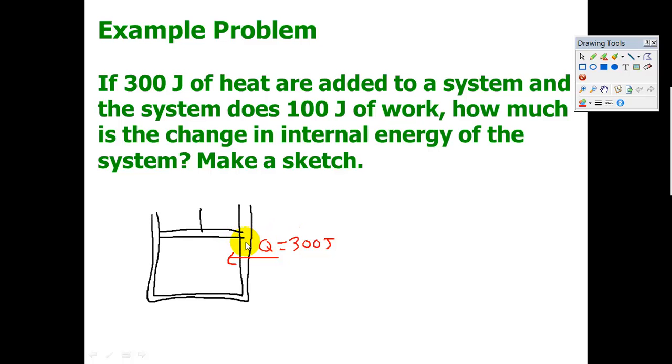And the system does 100 joules of work. What direction is that going to point? Hopefully you recognize that's going to be pointing up. Work is going to be 100 joules of work. It's the system doing the work, so that's going to take away energy. It's going to be negative 100 joules. So, how did the delta U change inside? The delta U would be 300 in, 100 out, 200 change inside.